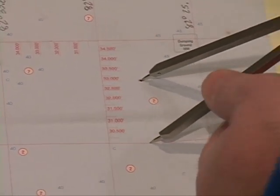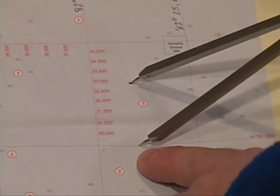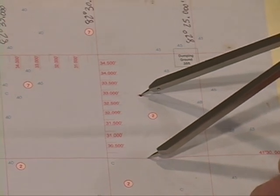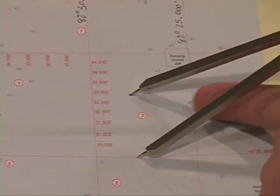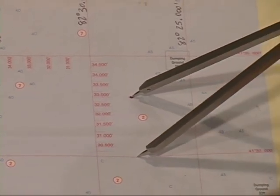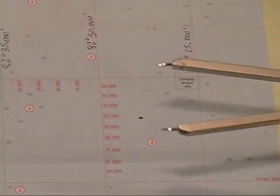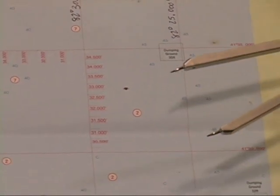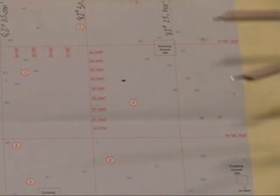So, what I have now is I have one leg of the dividers on my known point, 41 degrees 30.00 minutes. The other leg is on my unknown point. So, if I pull the dividers off I know that my unknown point is that distance from my known point.